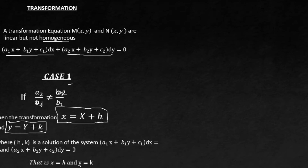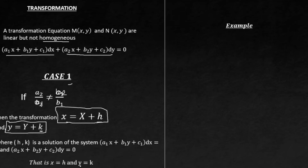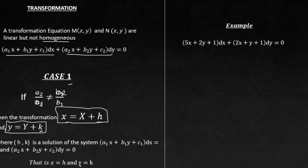Now we are going to take an example to help you understand. The reason you insert the big S plus h and big Y plus k is because we want to reduce the equation to homogeneous form, and if you remember when dealing with homogeneous equations you have to substitute something in order to do the separation.